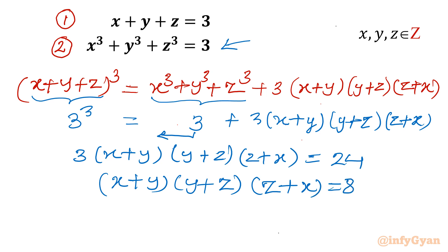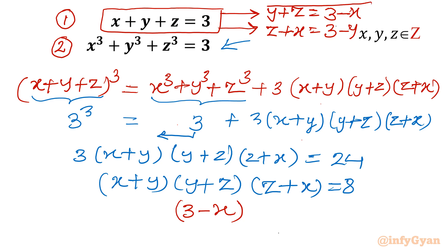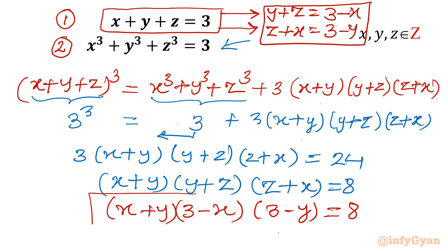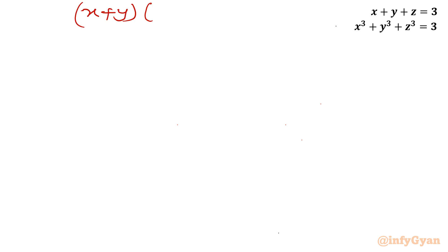Looking at equation 1, x plus y plus z equals 3, we can write y plus z as 3 minus x, and z plus x as 3 minus y. Replacing these in our equation, we get (x+y)(3-x)(3-y) = 8. So the equation is now in terms of x and y only. We will use prime factorization and draw a chart.